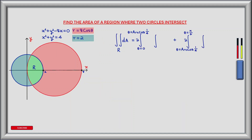Now we can define the limits of integration of the outer integral. The first runs from theta equals zero to theta equals arccos of a quarter. The second runs from theta equals arccos of a quarter to theta equals positive pi by two. We need to multiply the results by two in order to take advantage of the symmetry.